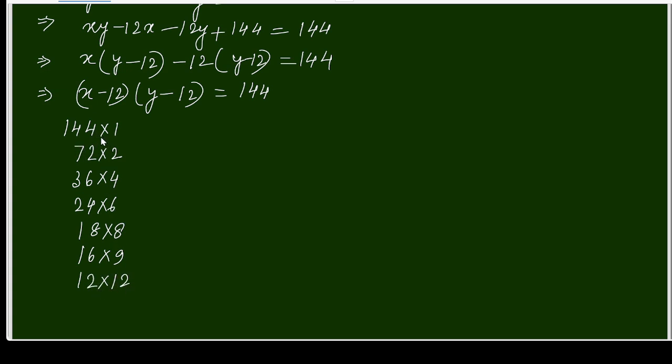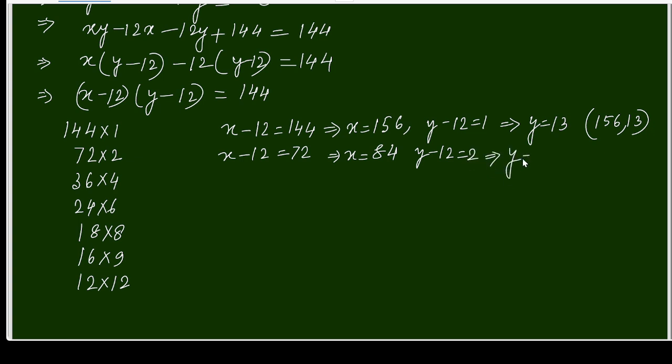Now for 144 into 1, x minus 12 equals 144, so x equals 156. And y minus 12 equals 1, so y equals 13. So one pair of solution I am getting is (156, 13). When 72 multiplies 2, x minus 12 equals 72, then x will be 84. And y minus 12 equals 2, so y equals 14. So the pair is 84, 14.